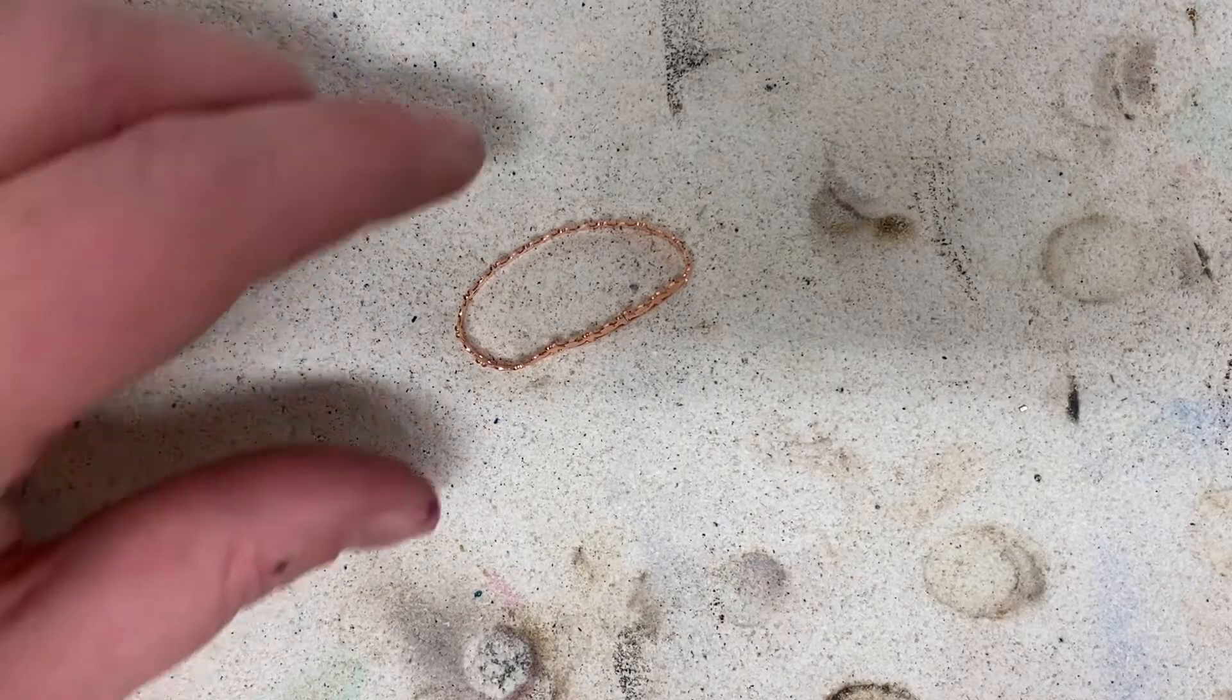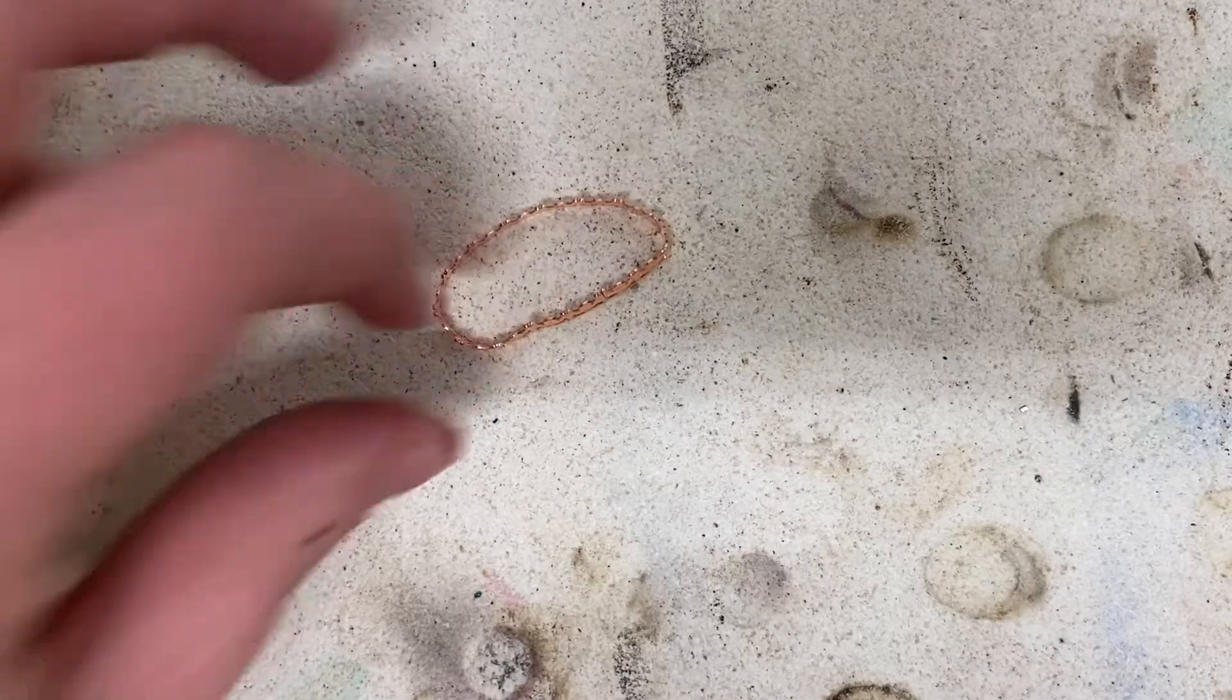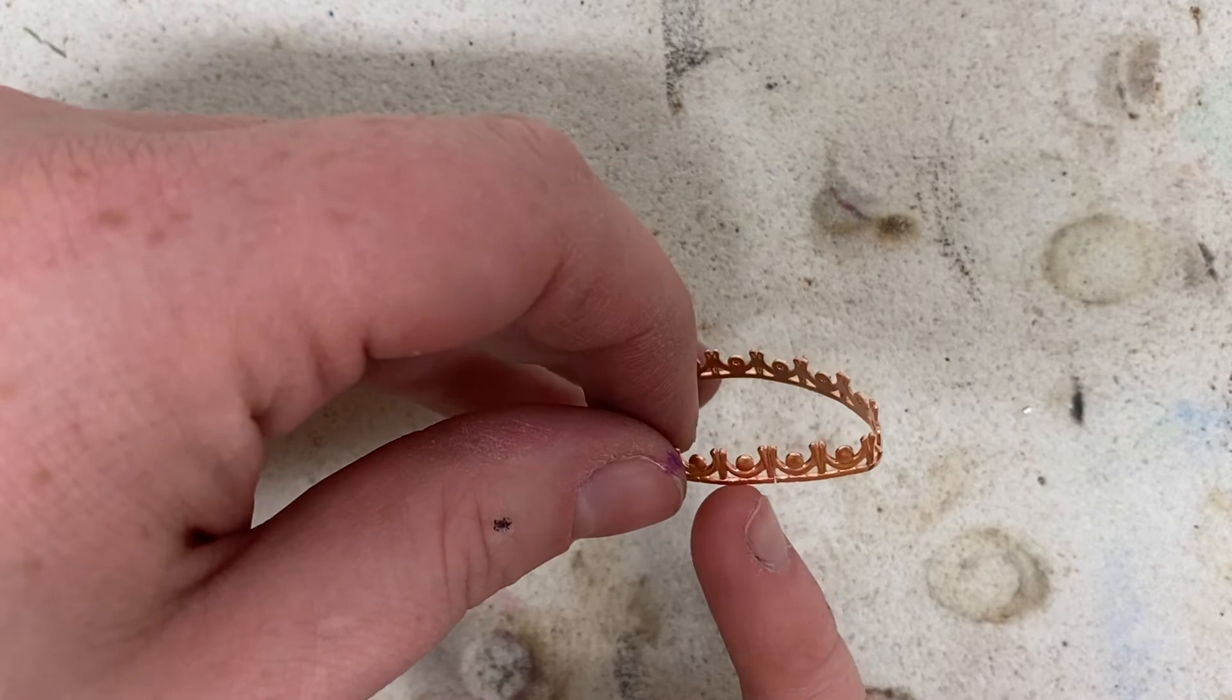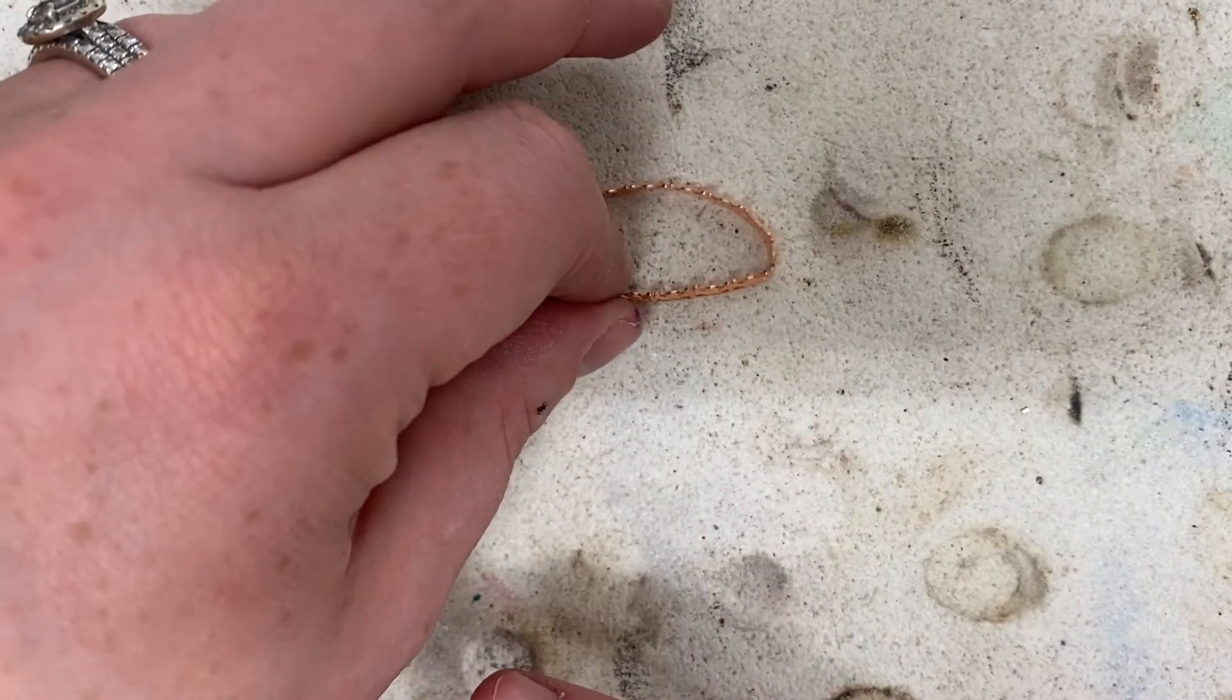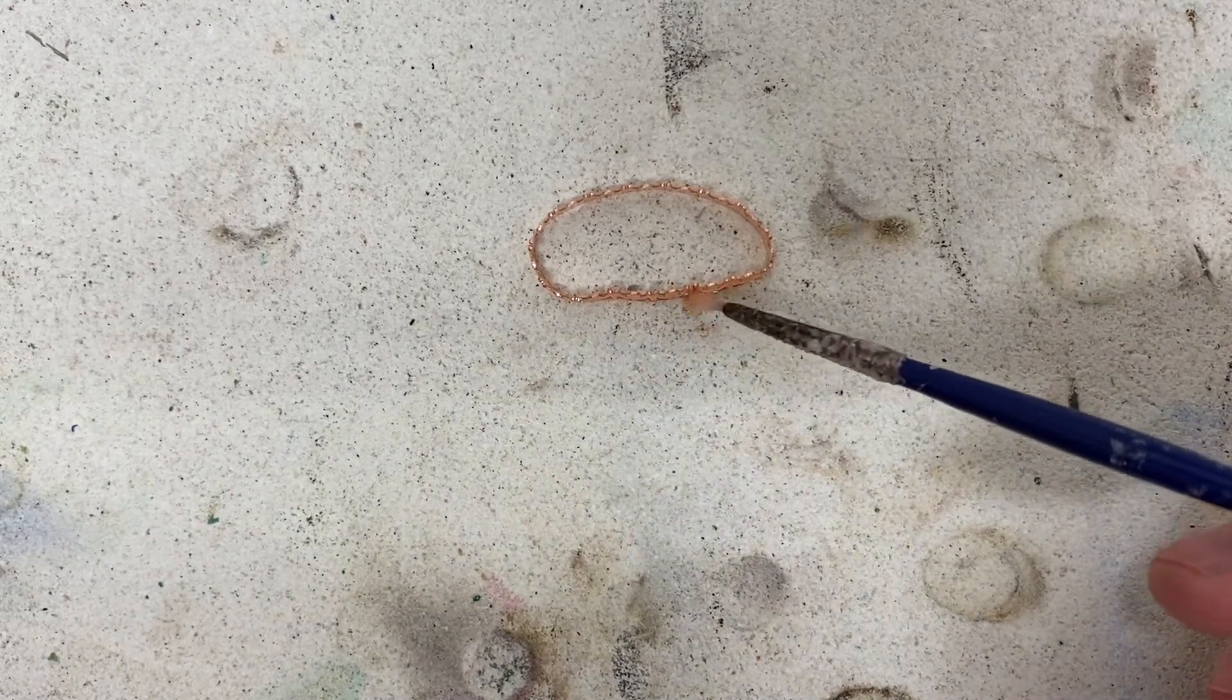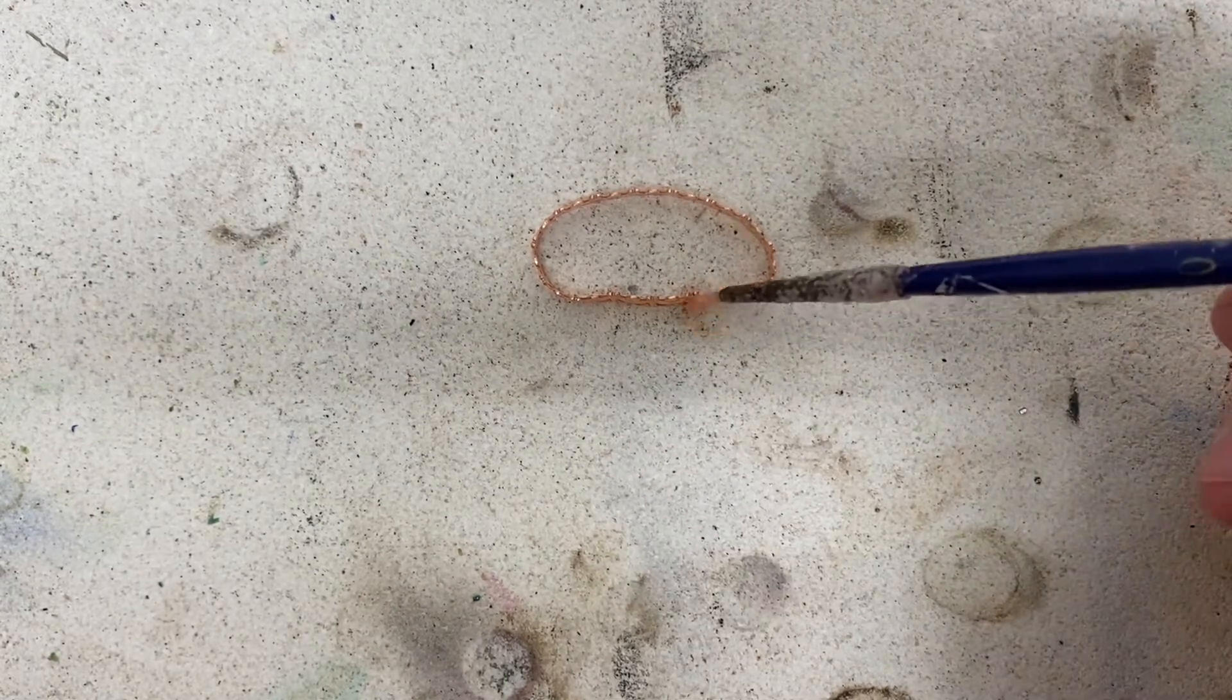I have my bezel wire over at my soldering station. We're actually not going to use our third arm for this. We're going to solder directly onto the block. My seam is right here. I actually had to remind myself where it was at. That's how tight of a seam I have. It's kind of hard to tell. I'm going to put that right here. We are still using flux. I'm going to paint my seam with the flux on both sides.